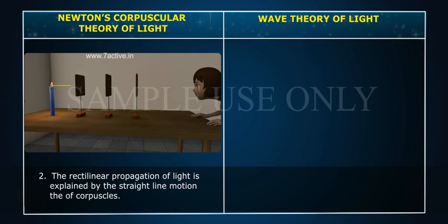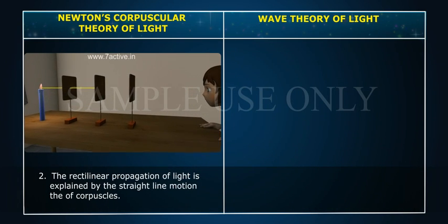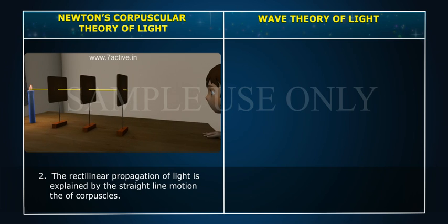Point 2: The rectilinear propagation of light is explained by the straight-line motion of the corpuscles.